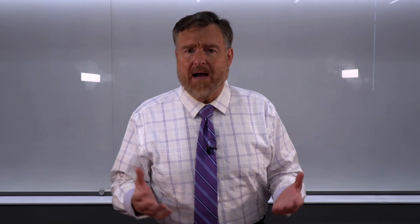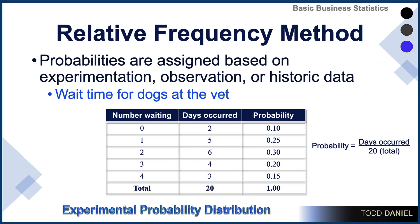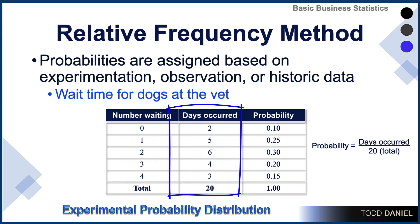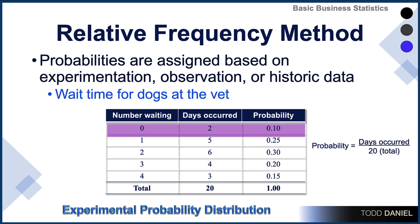Now let me tell you more about relative frequency. Probabilities are assigned based on experimentation, observation, or historic data. For instance, instead of rolling dice, we could figure out how long you typically wait for an appointment when you go to the vet. We notice that in the morning at eight o'clock when the vet opens, sometimes there are people waiting and sometimes not. The number of people waiting is in the first column, and the number of days that many people were waiting is in the second column.